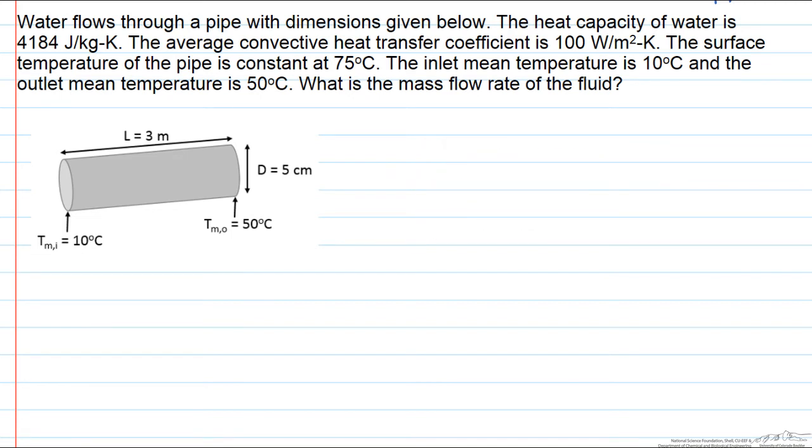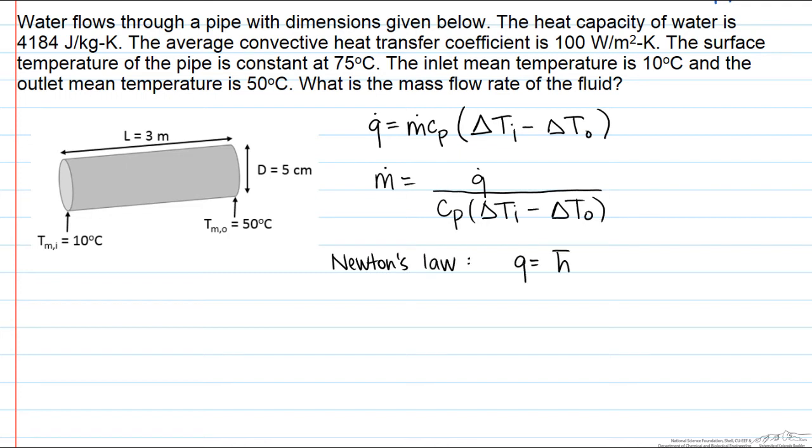We are going to start with our governing equation. Q dot equals our mass flow rate times that heat capacity delta Ti minus delta To. So our mass flow rate is going to equal our heat transfer rate divided by that heat capacity times those temperature differences. We are going to have to use Newton's law of cooling, Q equals our heat transfer coefficient times the area times the delta T log mean.